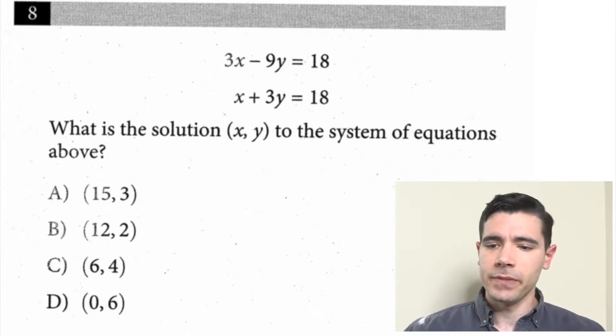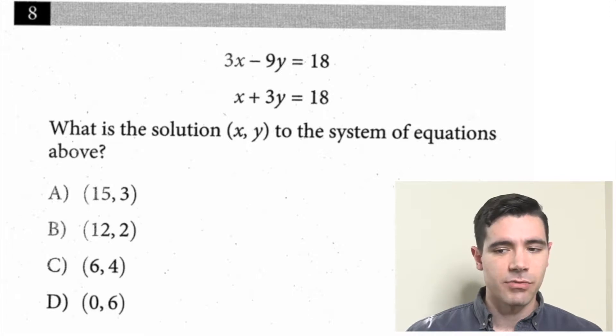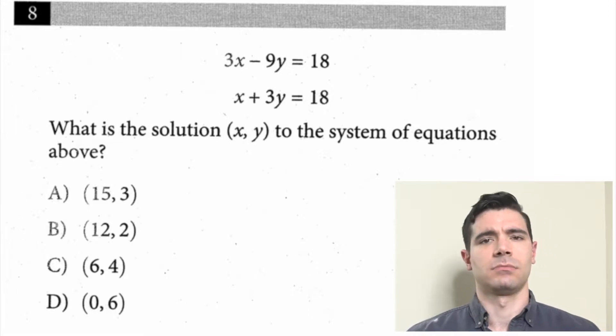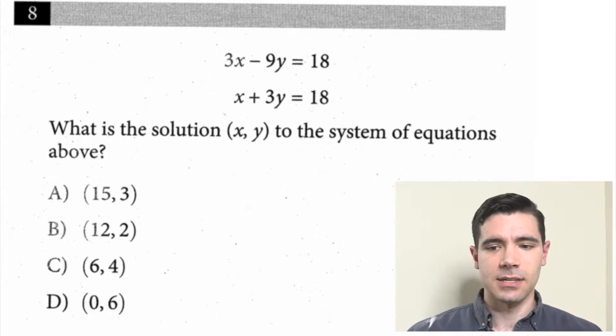Because we're getting in there. It reads 3x minus 9y equals 18, x plus 3y equals 18. They both equal 18, what are the odds? What is the solution (x, y) to the system of equations above?